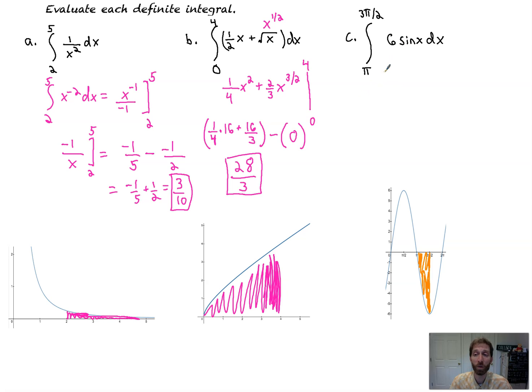We can factor out that six if you want. I'm just going to kind of hold it there and I'm going to antidifferentiate. So that's going to be six times negative cosine x, because the derivative of cosine is negative sine. We need that negative to make it positive sine. That's going to be evaluated from pi to three pi over two.